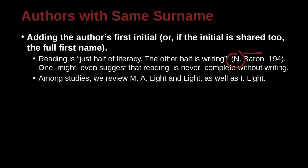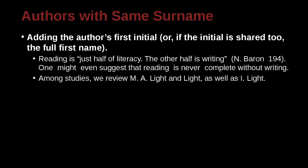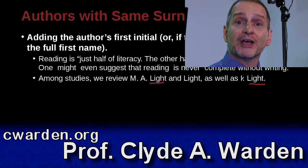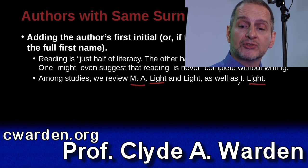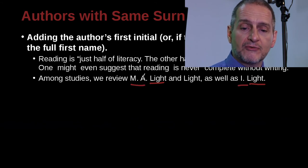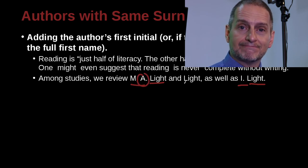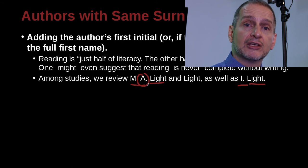For example: 'Among studies, we review M.A. Light and Light, as well as I. Light.' So I. Light is one author, and M.A. Light and Light are different authors. The key point is that the first authors have the same last name. So how do we solve this? We use the beginning initials of their first name — in this case, first name and middle name. That helps us separate them and lets the reader quickly find in the reference list where the different papers are from.